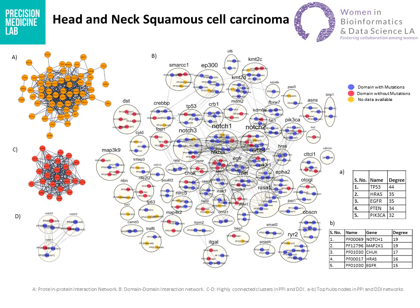We also identified the top HUB domains, in which the notch domain was on top. The notch protein domains also formed the densely connected cluster in the domain-domain interaction network shown in figure D.